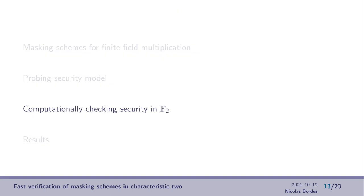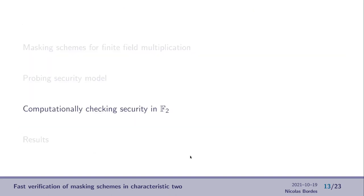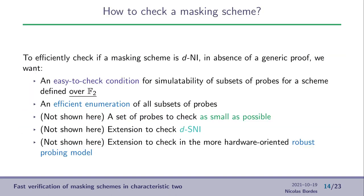But now, we need to check the security of a given gadget in this model. For example, if we go back to this circuit, this gadget, I said to you that it is d-private. In fact, it is also d-NI. But to prove that this gadget is d-NI, in absence of a generic proof, we need to check that for every set of less than d probes, this is d-simulatable.